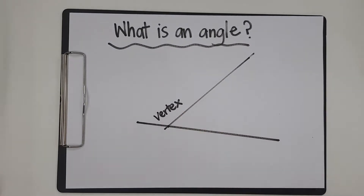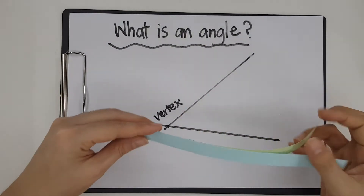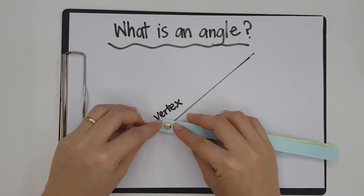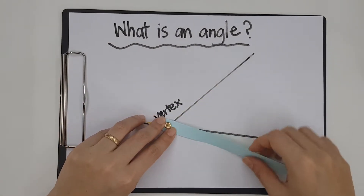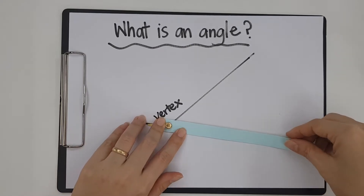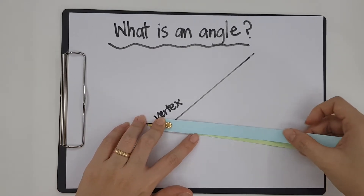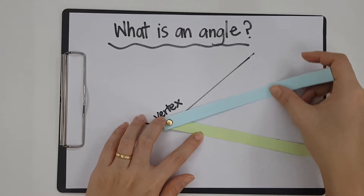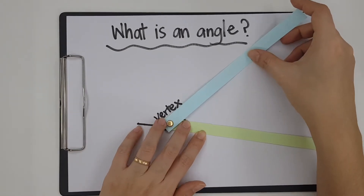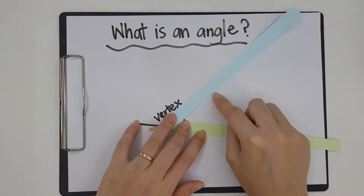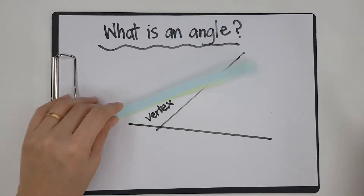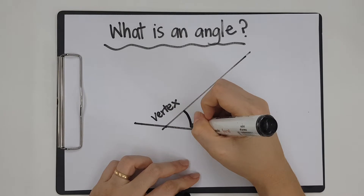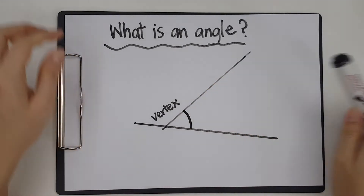The size of an angle depends on the amount of turning. I'm going to show with geostrips — I'm going to put this knob on the vertex, on one of the lines. The size of an angle is how much the amount of turning. If I turn from here all the way to there, this is the amount of turning, and that is the angle that is formed. I'm going to mark it out here on my board — this is the angle that we are looking at.